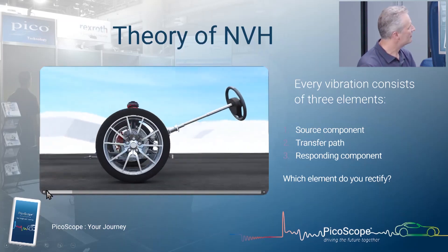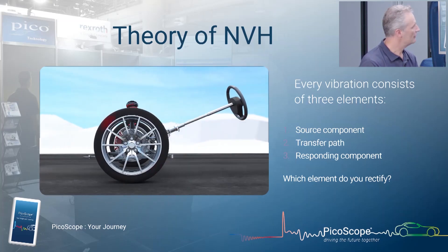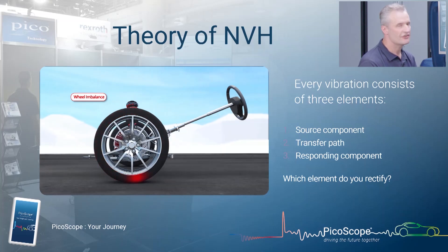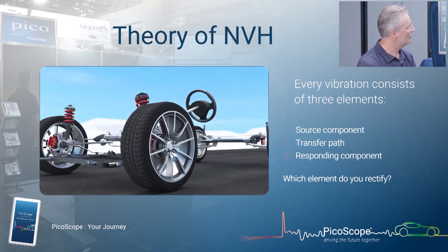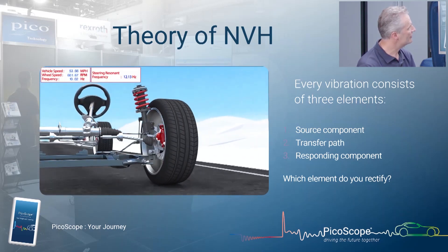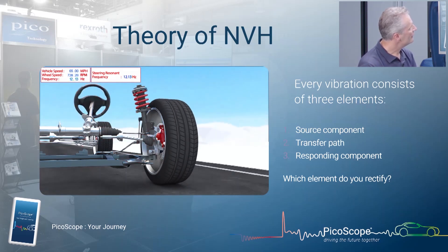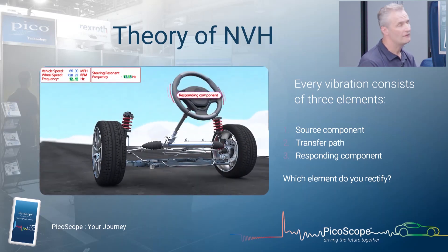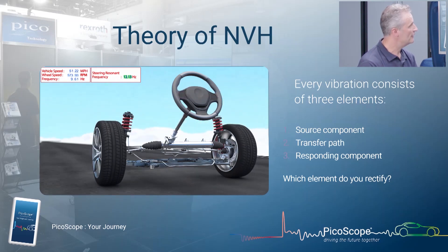Here is that theory in practice. Imagine an unbalanced road wheel — there's a tendency for the wheel to move outward as the weight reaches the top. That imbalance transfers through the suspension, and you can see how that energy dissipates through the vehicle and up the steering column, which acts like an antenna where we feel the vibration — there's our responding component. We could try to doctor the steering wheel, but the correct procedure is to go to the source and balance the road wheel.